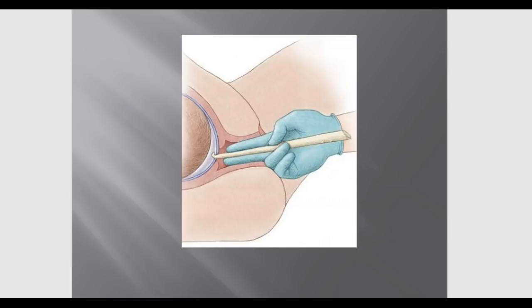This image shows how we artificially rupture mom's amniotic sac — the device that looks like a crochet hook snags and ruptures the bag of waters where the baby is held in utero.